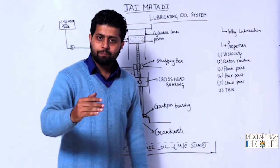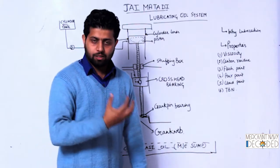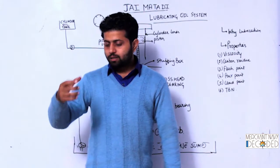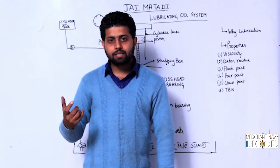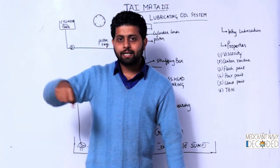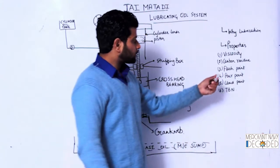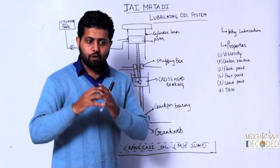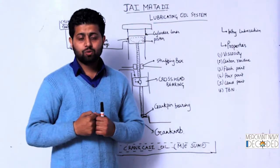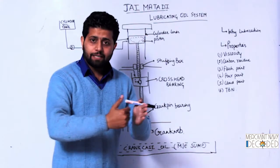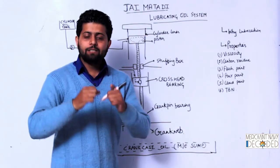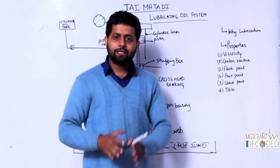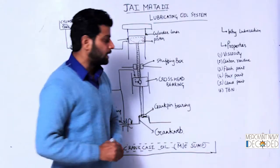What is pour point? It is that temperature below which lube oil ceases to flow — stops flowing. In the case of water, the pour point is 0°C, below which it becomes ice and will not flow. What is cloud point? It is that temperature at which lube oil forms wax crystals, making it very difficult to flow, and if it is flowing it will choke the filters. These properties we also studied when talking about fuel.